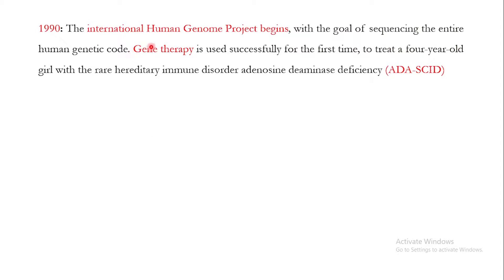In 1990, the international Human Genome Project began with the goal of sequencing the entire human genetic code. That same year, gene therapy was first used successfully for the treatment of an hereditary immune disorder known as ADA-SCID — adenosine deaminase deficiency severe combined immunodeficiency — though the treatment was successful only for a limited period of time.